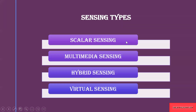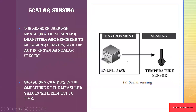There are four kinds of sensing: scalar sensing, multimedia sensing, hybrid sensing, and virtual sensing. Getting into detail — what is scalar sensing? Here you can see an event, like a fire happening in an environment, and a temperature sensor is measuring the temperature of that environment. It is called scalar sensing because it is used to measure scalar quantities such as light, humidity, pressure, and temperature.